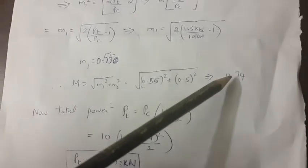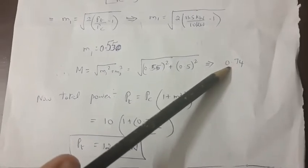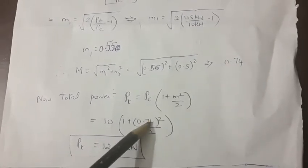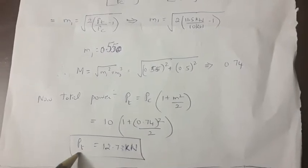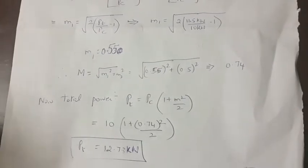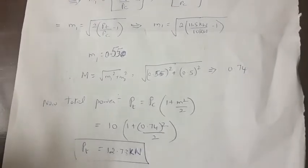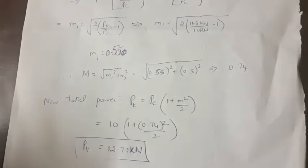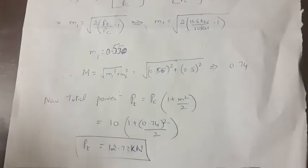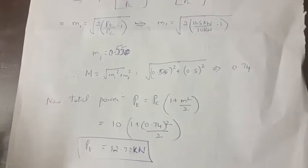Now calculate the total power radiated. Use the equation: total power = carrier power × (1 + M_eff²/2). The effective modulation index is 0.74, so the total radiated power is 12.73 kilowatt. In practice, more than one signal can be transmitted simultaneously, and you can calculate the final effective radiated power from the transmitter.